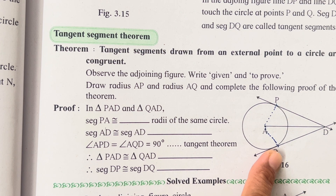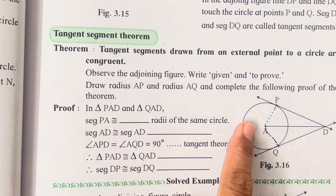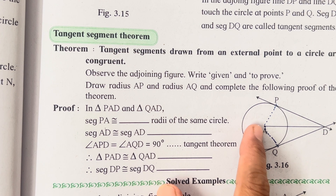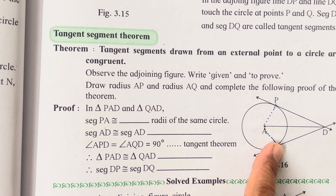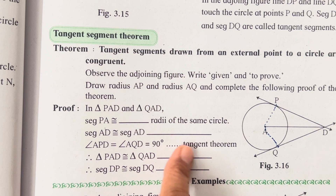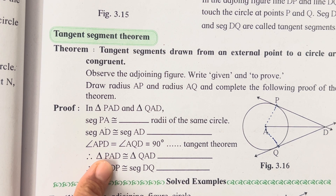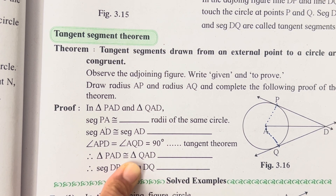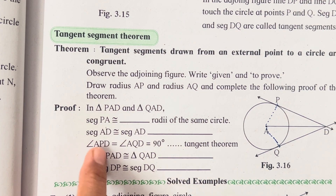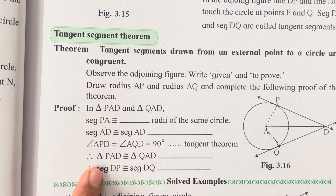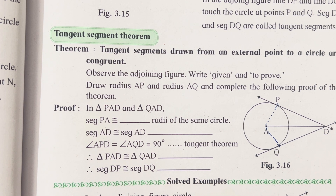Angle APD equals angle AQD equals 90 degrees by the tangent theorem — when we draw a perpendicular from the center of the circle to the tangent, it forms a 90-degree angle. We now have three conditions, so by the hypotenuse-side (or RHS) test, triangle PAD is congruent to triangle QAD. Therefore, segment PD is congruent to DQ. That completes the proof of the tangent segment theorem.